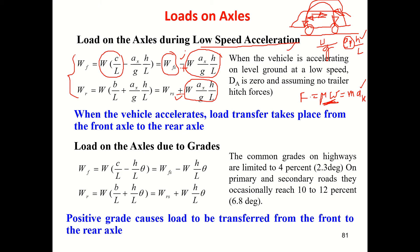But during acceleration, load is lost from the front axle. That is why, by keeping the center of gravity nearer to the front axle and loading more on the front axle statically, even though part of the load is lost dynamically, there will still be enough load available for acceleration performance. That is why in front engine FWD, the CG is placed nearer to the front axle.